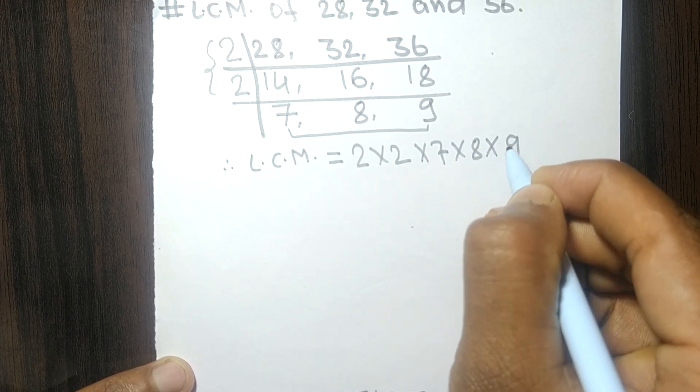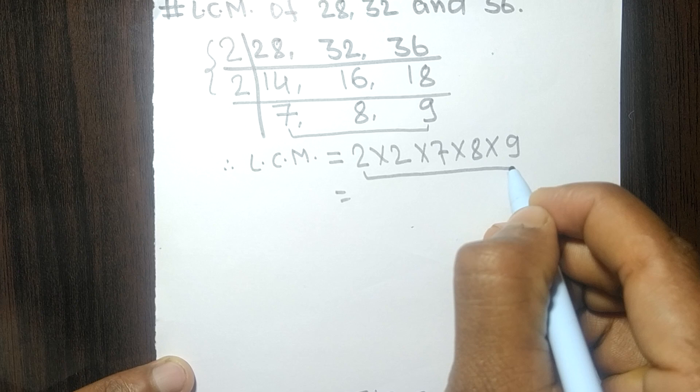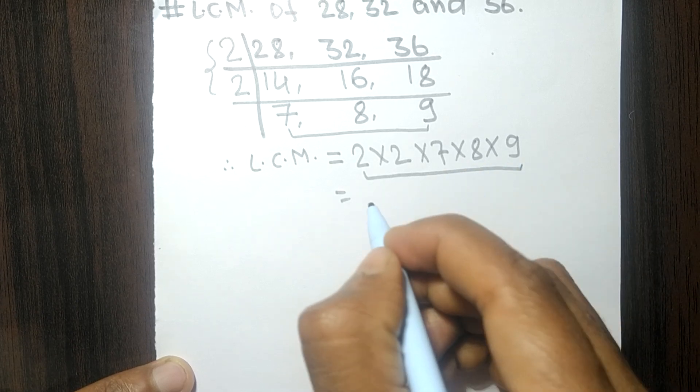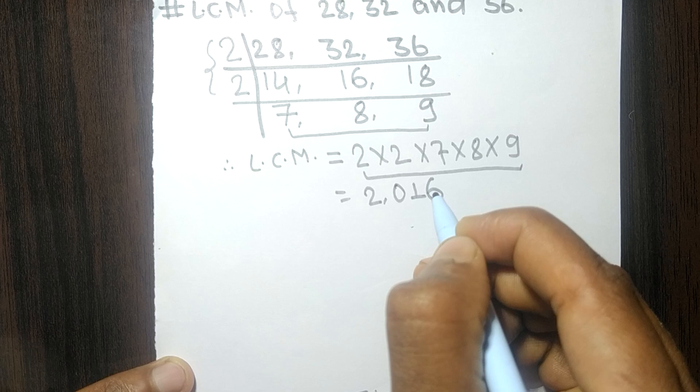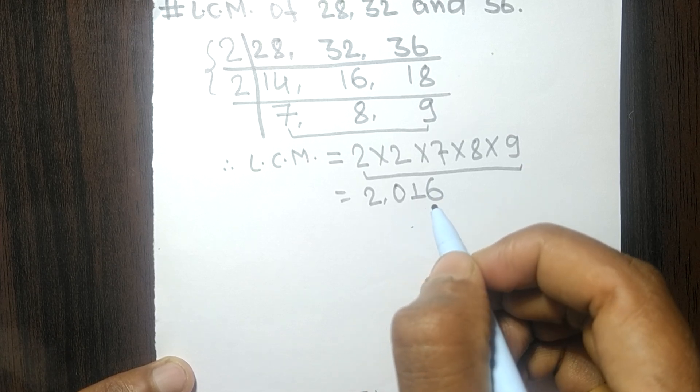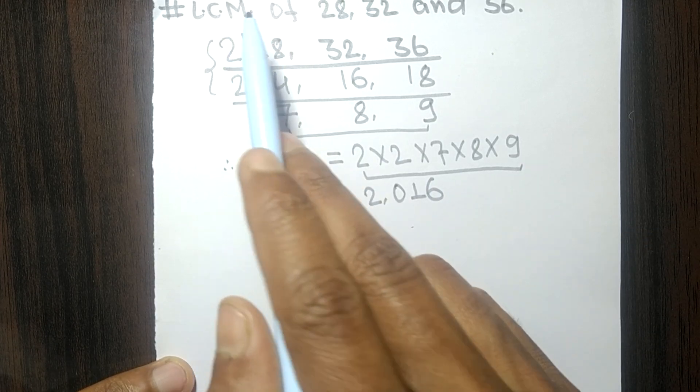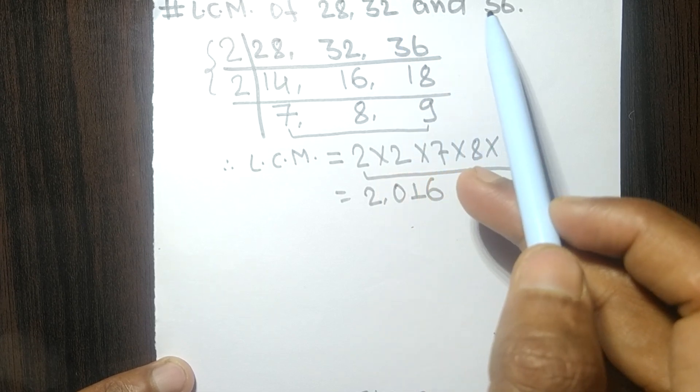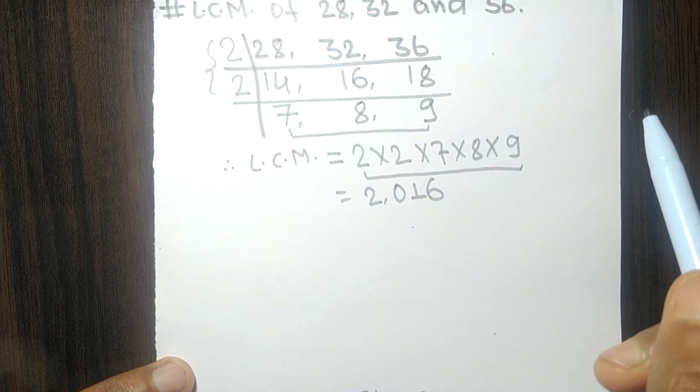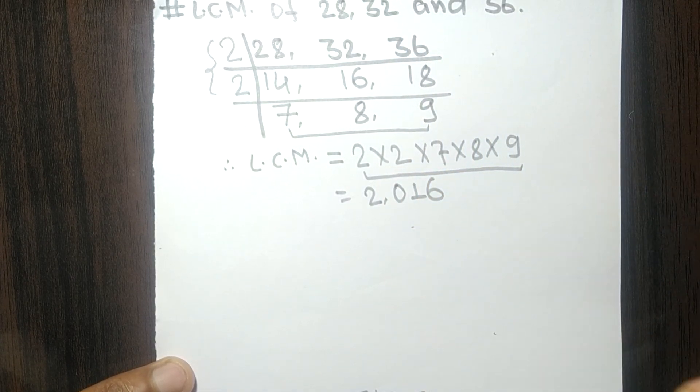By multiplying all these numbers we get 2016. So 2016 is the LCM of 28, 32, and 36. So this much for today and thanks for watching.